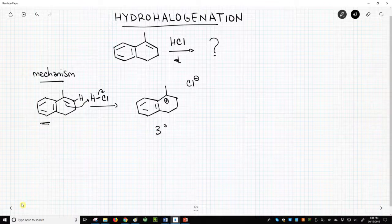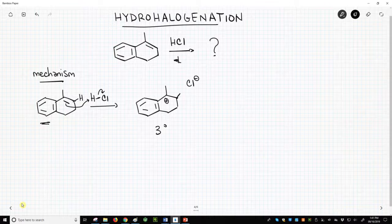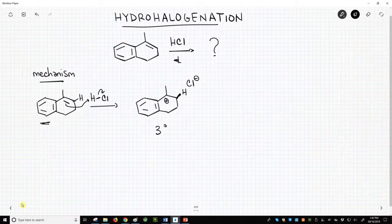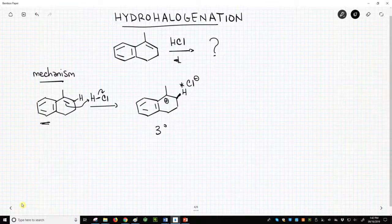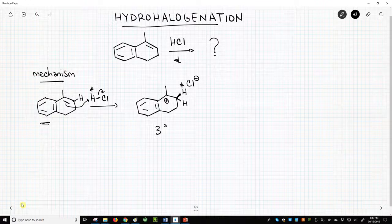Because the alkene is flat, the incoming hydrogen can approach from the top or bottom face. Both will happen, but we can only draw one. Let's show the new hydrogen on the top face and give it a star to distinguish it from the hydrogen that was already attached to the carbon in the starting material. The star will be useful when discussing stereochemistry.